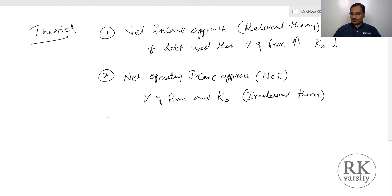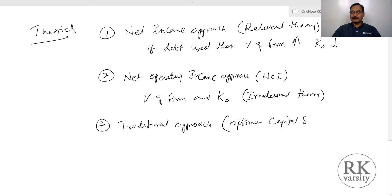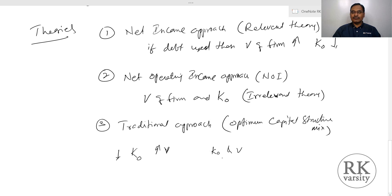The third approach is the Traditional approach. The Traditional approach says that there is an optimum capital structure mix. By using debt in a capital structure to a certain extent, the company can minimize its overall cost of capital and increase the value of the firm. But after a certain level, the overall cost of capital and the value of the firm will not be favorably affected — the cost of capital may increase and the value of the firm may decrease.